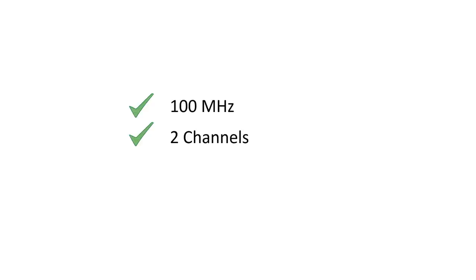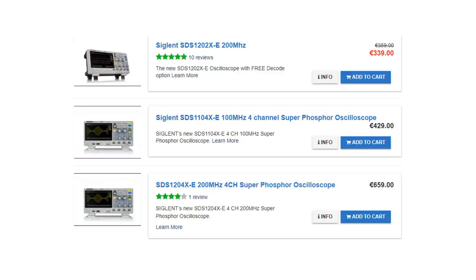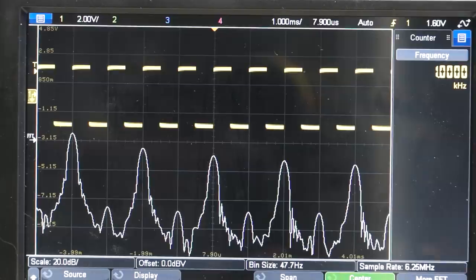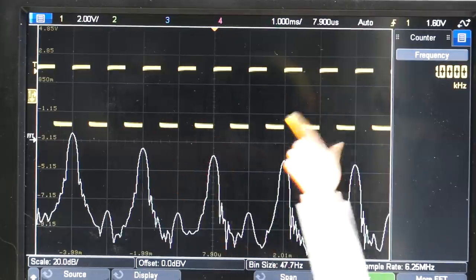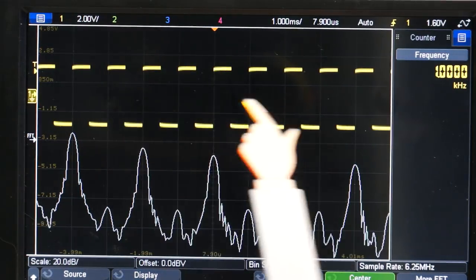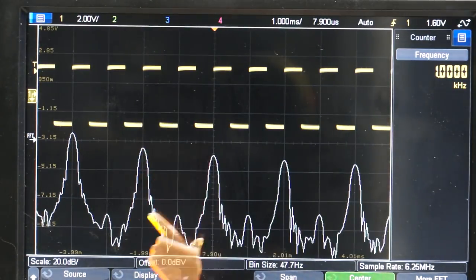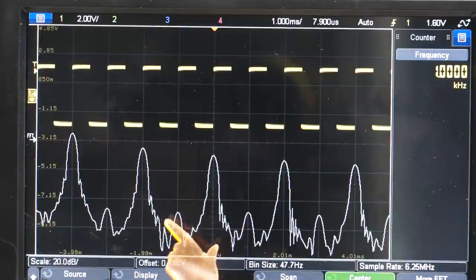Also keep in mind that all models in one series use the same software. So also the cheapest model has all functionality of the more expensive ones. The difference is frequency range and number of channels. Displaying rectangular signals need an oscilloscope which is capable to at least measure three times the frequency of the signal.